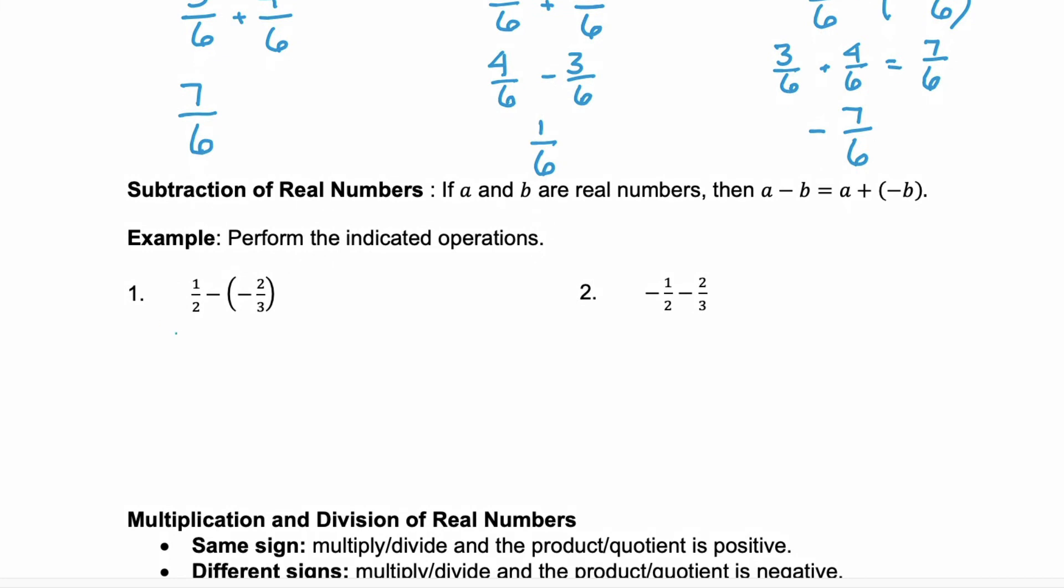Now in example 1 and 2 here, notice we have those same fractions again. So we know the LCD is 6, so we're just going to rewrite the problems. We have 3/6 minus a negative 4/6. If we apply this subtraction rule, we can change this subtraction to addition of the opposite of what's in our parentheses. And the opposite of negative 4/6 is a positive 4/6.